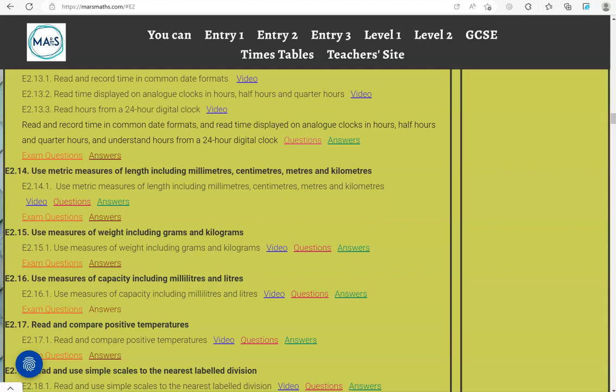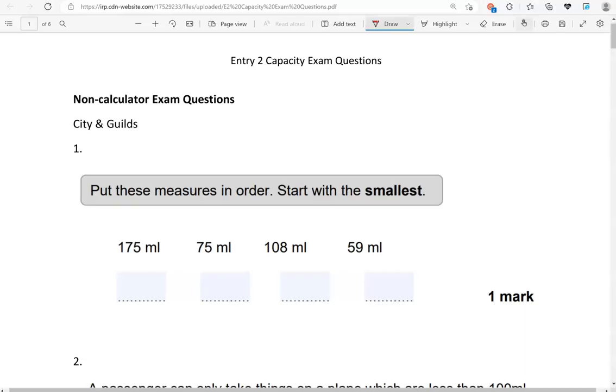In this video, we'll go through exam questions that cover the criteria, use measures of capacity, including milliliters and liters. You can locate the questions on the massmass.com website under Entry 2. The questions come from different exam boards. We'll start with the non-calculated questions, and then we'll move to the calculated questions.